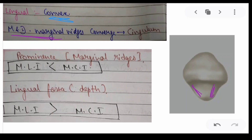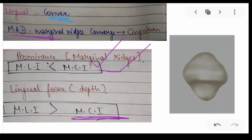The distal marginal ridges converge and form the cingulum. From the incisal aspect, the prominence of marginal ridges of the mandibular central incisors is greater than that of the mandibular lateral incisors — which differs from the lingual aspect view where lateral incisors showed greater prominence. Regarding lingual fossa depth, the mandibular lateral incisors have a deeper lingual fossa than the mandibular central incisors, consistent with what was seen from the lingual aspect.